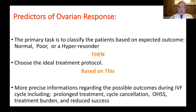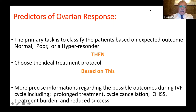What are the predictors of ovarian response? The primary task is to classify patients into normal patients, poor responders, and hyper-responder patients. We first classify patients into these three categories and then choose the ideal treatment protocol for each of them.